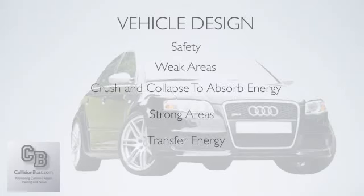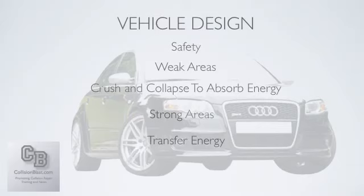They started trying to make cars safer, and at the same time the government wanted better fuel efficiency. So they started coming up with ways to make cars lighter while engineering them to be lighter and safer at the same time. The way they did this is to make weaker areas in parts of the car — called crush zones or collapse zones — which absorb some of that energy, acting like a shock absorber. They also make stronger areas to help protect the passengers and transfer the energy around them.